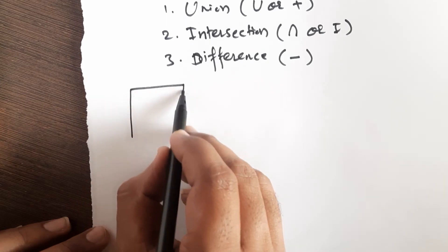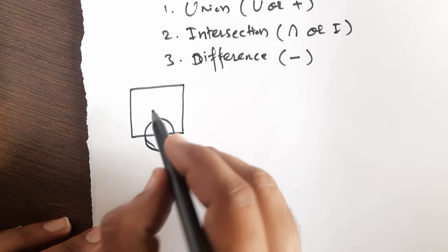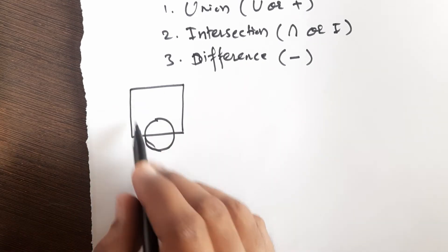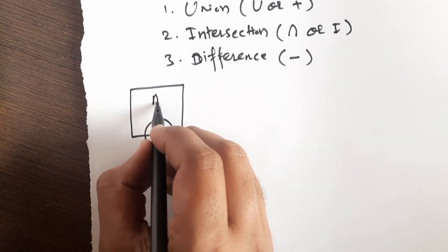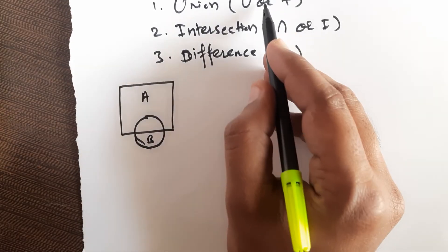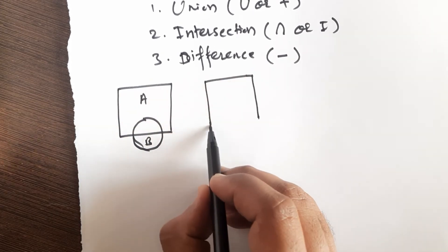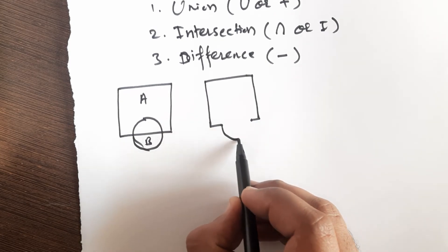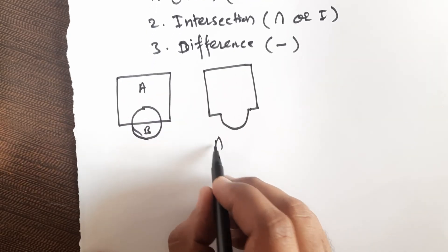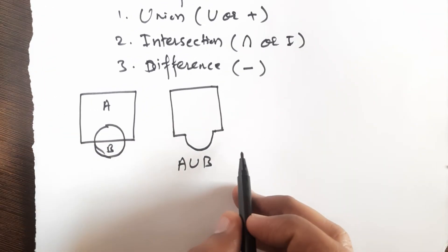To explain how Boolean operations work with an example: suppose you have a block and a cylinder — in 2D, a square and a circle; in 3D, a block and a cylinder. Let entity A be the block and entity B be the cylinder. If you apply the Union operation on A and B, the resultant geometry will be A united with B — both shapes combined into one.